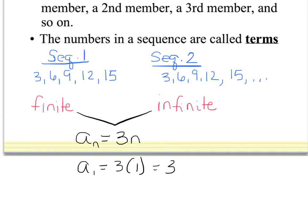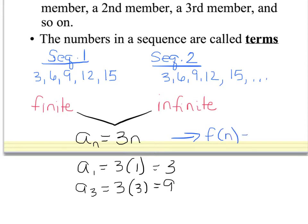If I wanted to do the third term, or my a sub 3 term, I'm going to go 3 times 3, replacing n with 3, and this gives me 9. You'll see that the third term gives 9, just as calculated. We can also write it as f of n equals 3n, or a function in terms of n equals 3n.